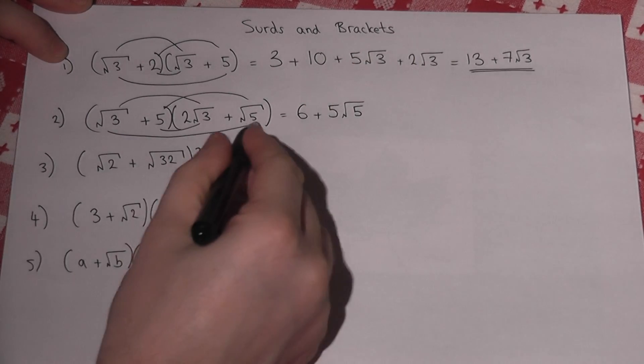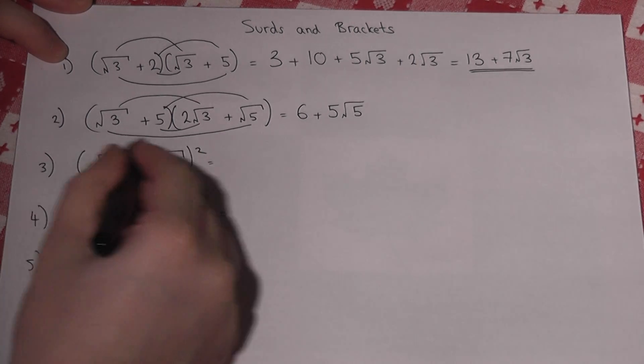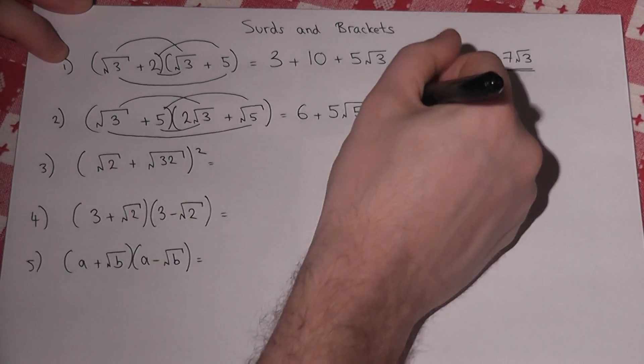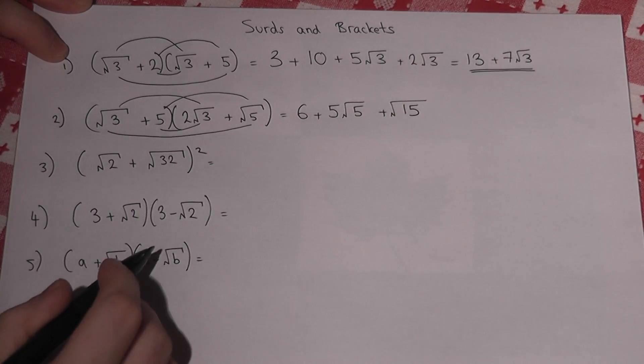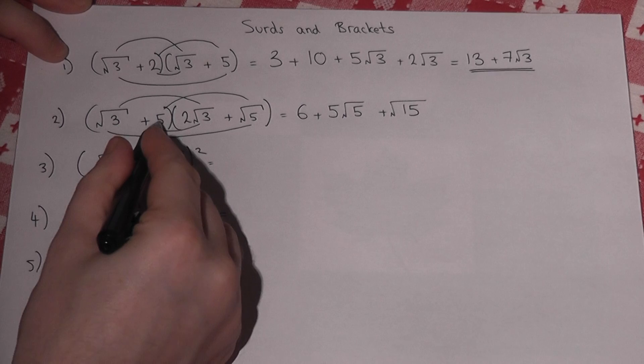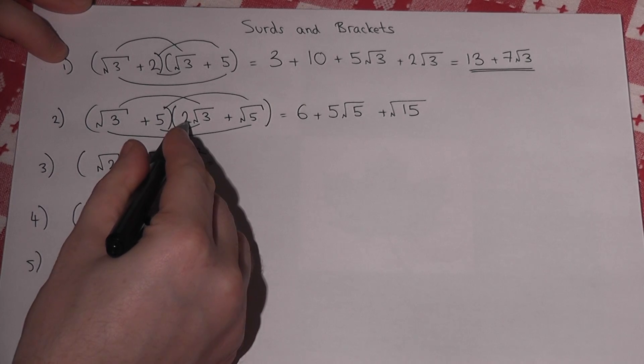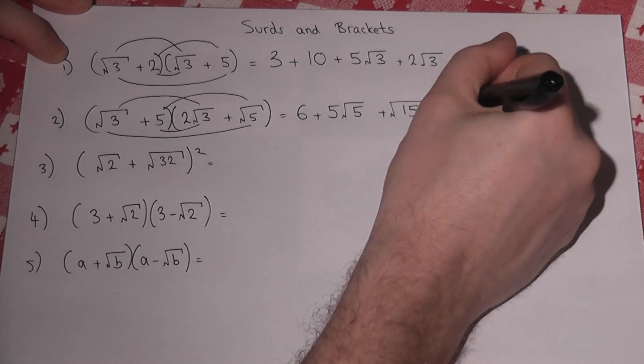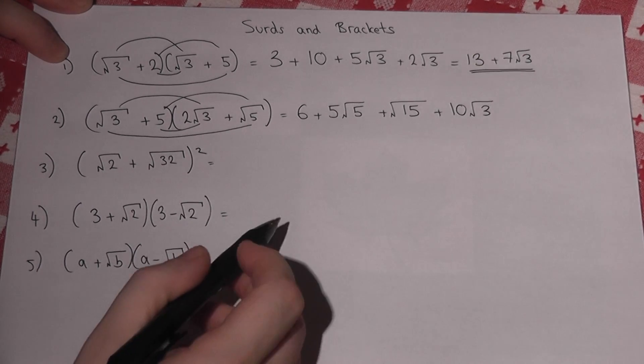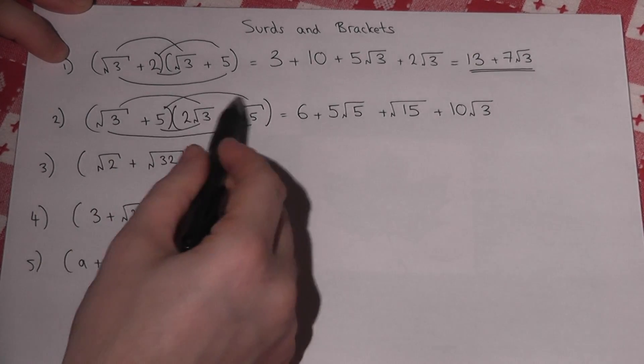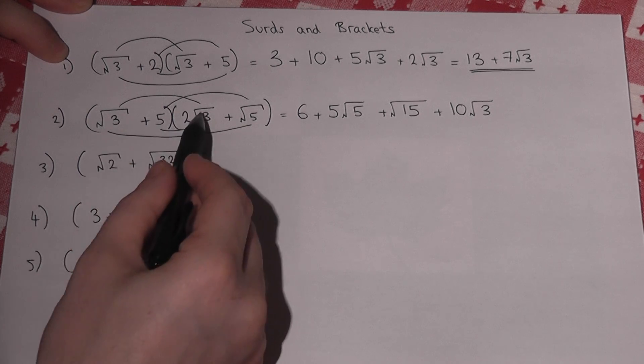Now down here, root 3 times root 5 is just root 15. And this, 5 times 2 is 10, so it's just 10 root 3. So these questions are just composed of 4 separate surd timesing questions.